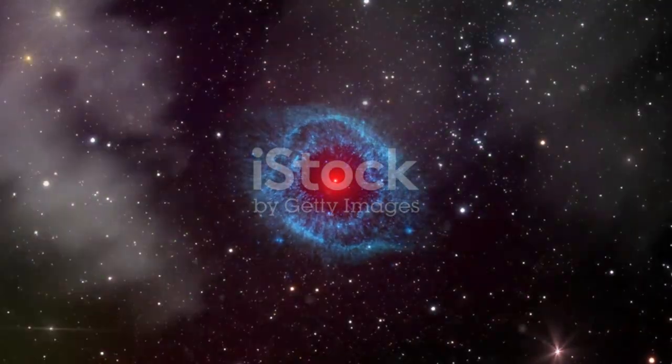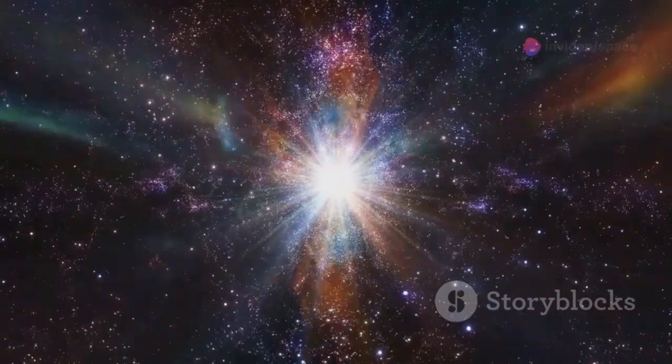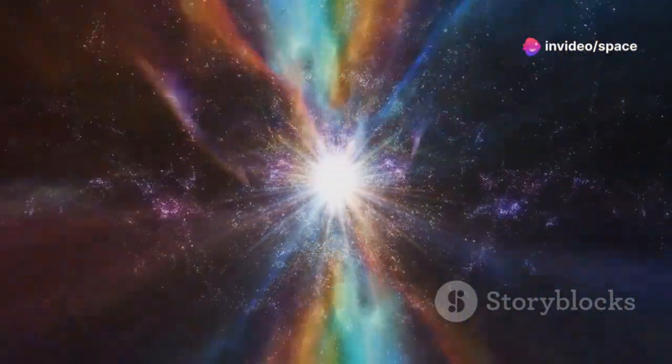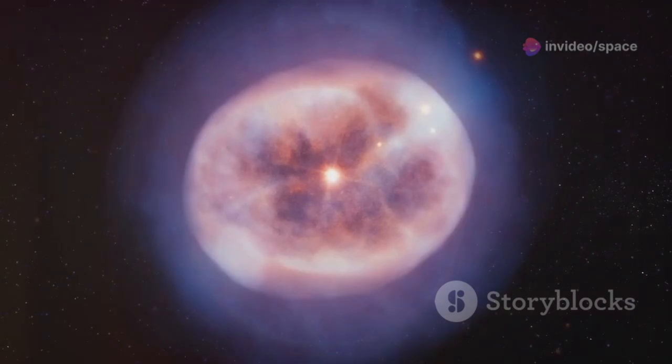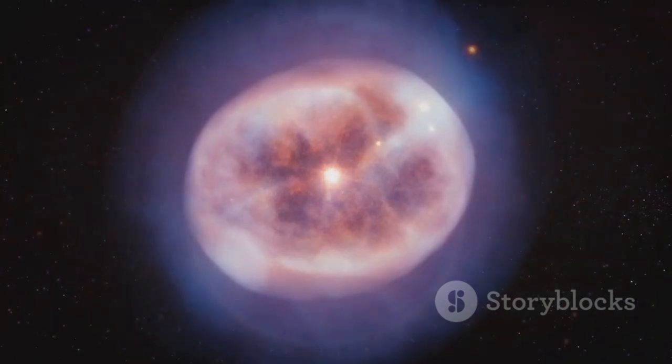Once the helium in the core is exhausted, the cycle of core contraction, heating and ignition of heavier elements, continues. For stars like our sun, this process culminates with the ejection of its outer layers, forming a beautiful planetary nebula.